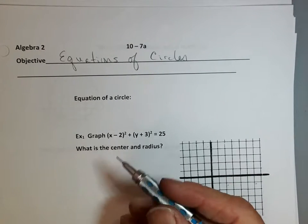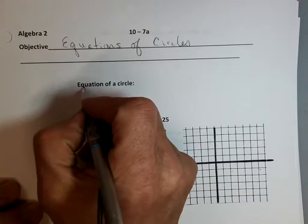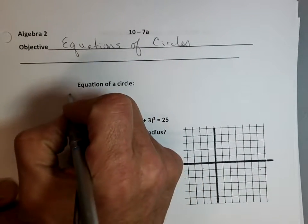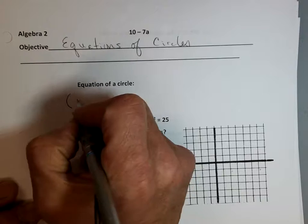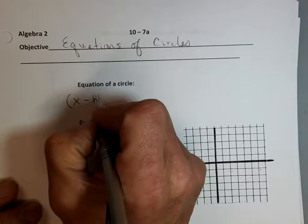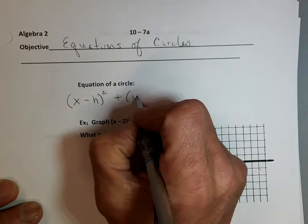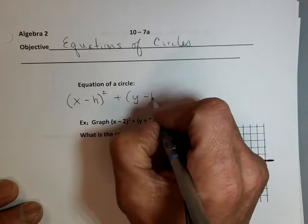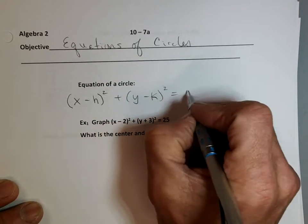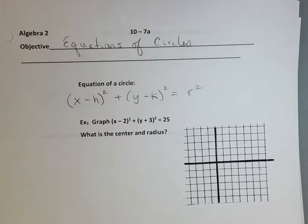Write this down. We have standard form of a circle is: parentheses x minus h, squared, plus y minus k squared equals r squared. That is the standard equation of a circle in standard form. Write that down.